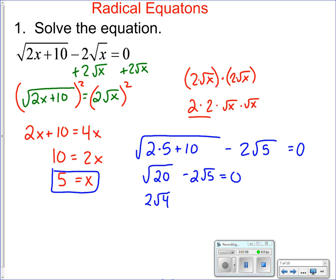√20 is 2√5, so that's 2√5 - 2√5, which does equal 0, so it works out. Please make sure you check your answer to make sure it works.